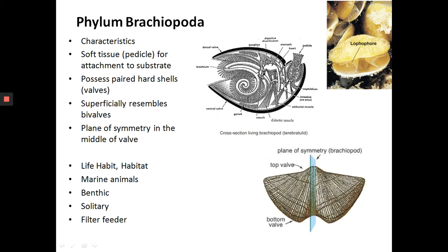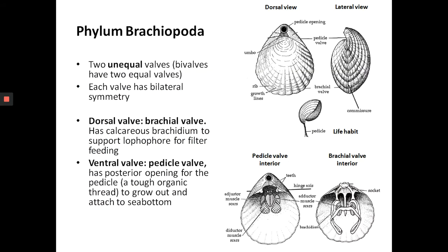This cross-section of a brachiopod shows the internal organs. You can see the lophophore used for filter feeding and respiration, and the organs at the back — muscles, the digestive system, and so on. In terms of life habit, all brachiopods are marine, benthic organisms. They are solitary, not colonial like the bryozoans, and they are filter feeders. Here is a modern-day brachiopod with the two valves — you can actually see the lophophore.